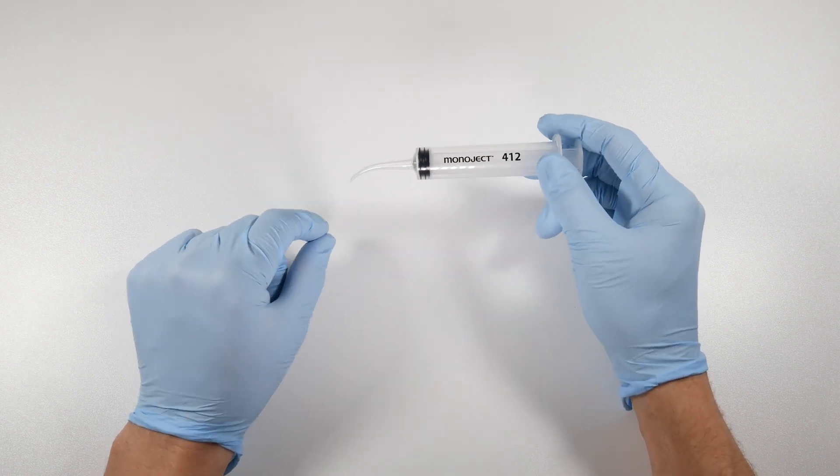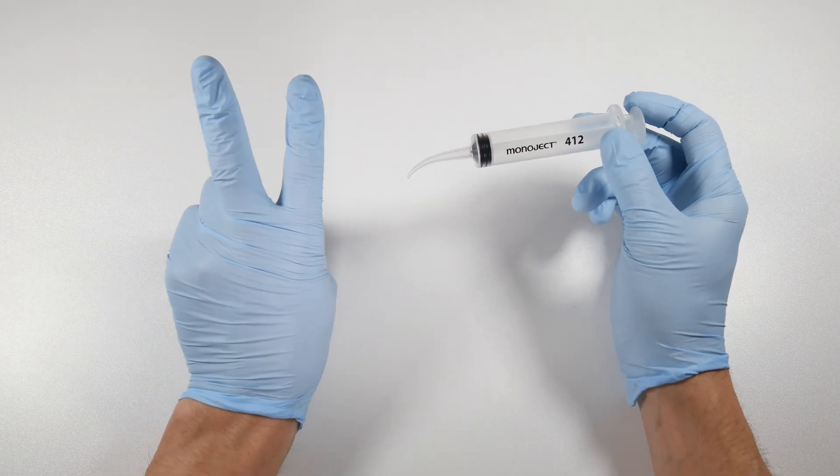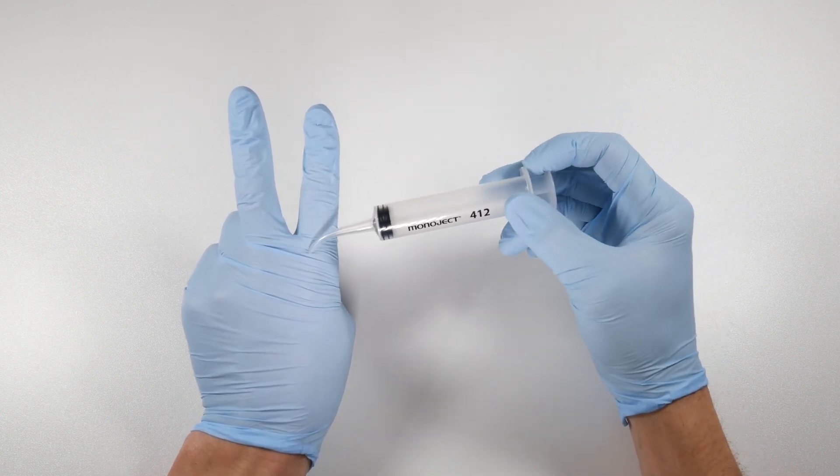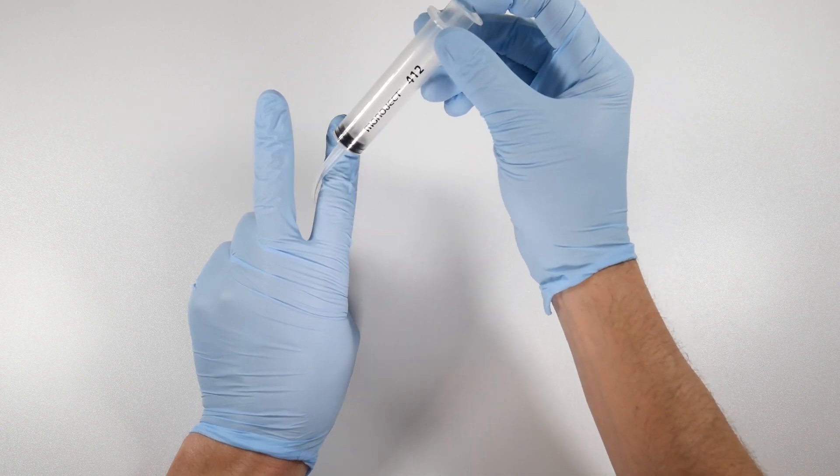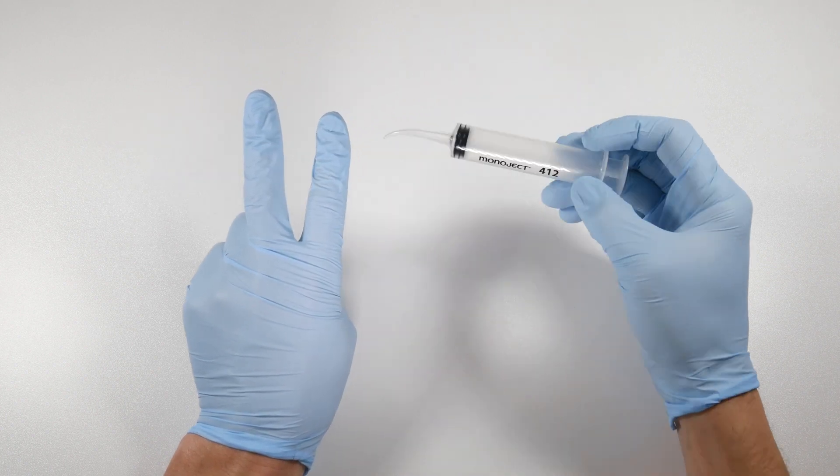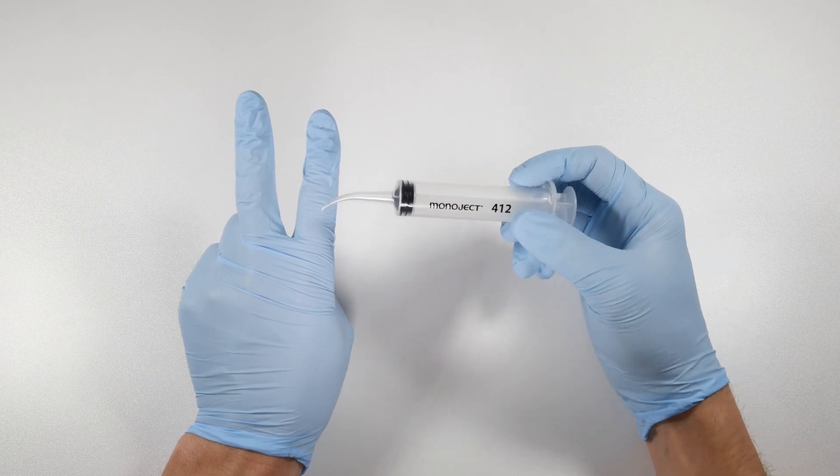The small tip allows you to get down to the base of a socket if you think how a socket is shaped. The root is getting narrower as it goes to the base, so this will allow you to reach way down as far as you can into there to make sure you get all the debris out from the site.